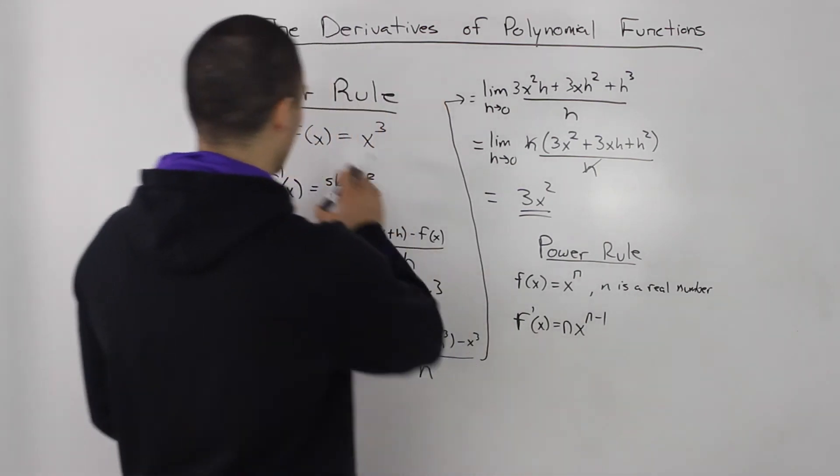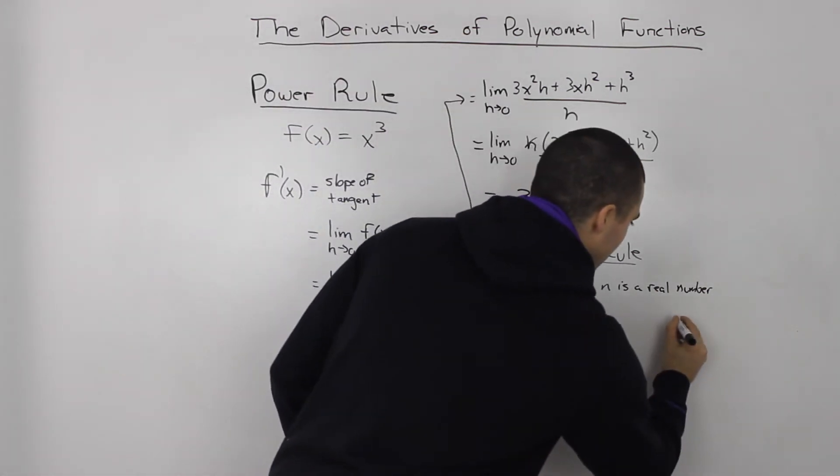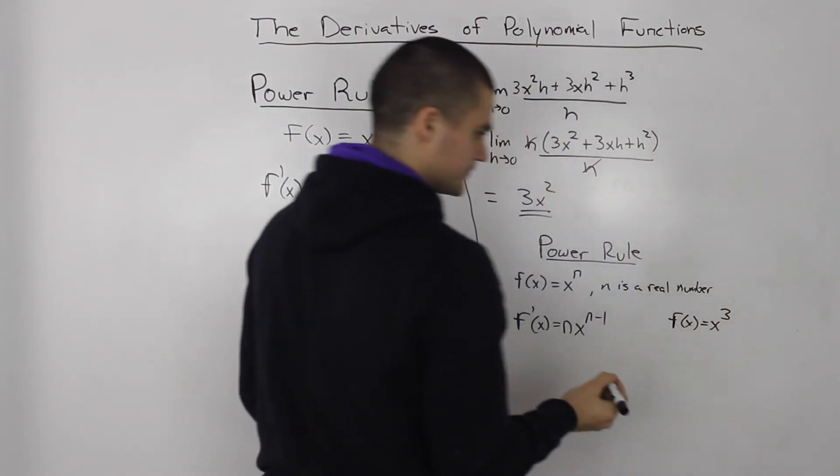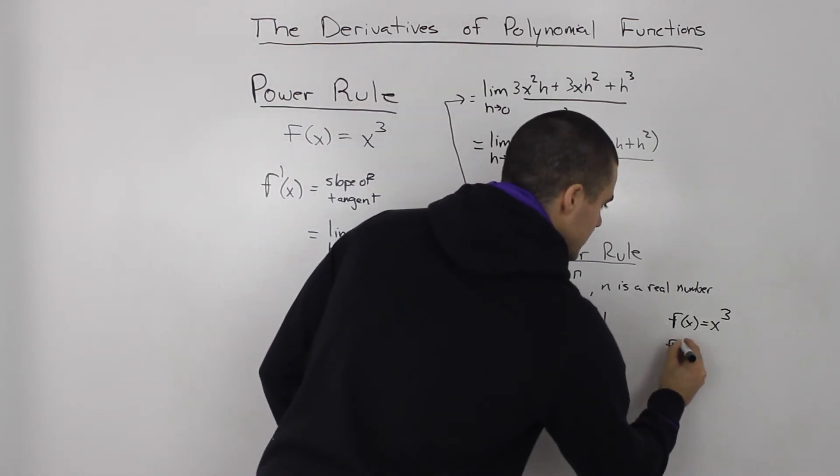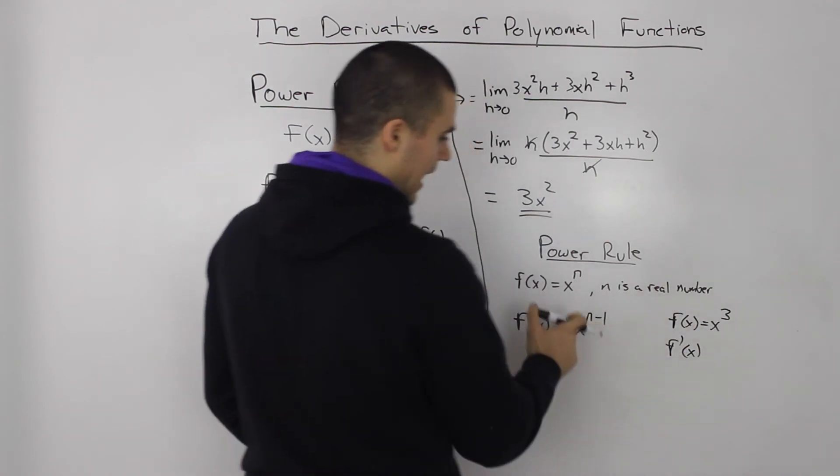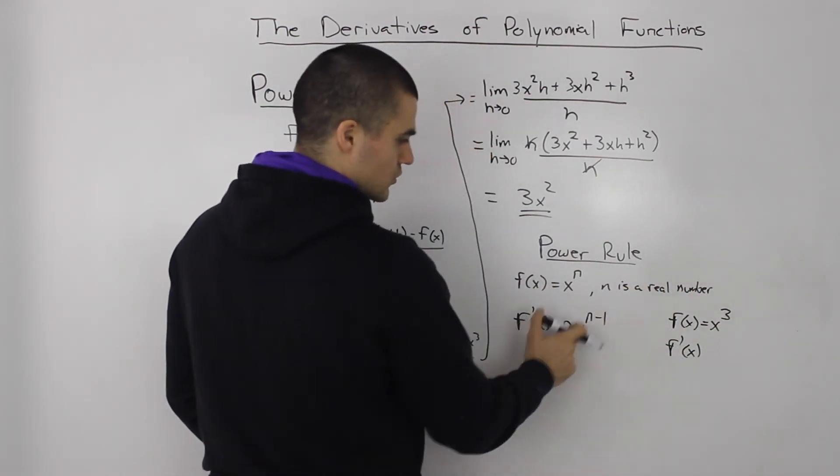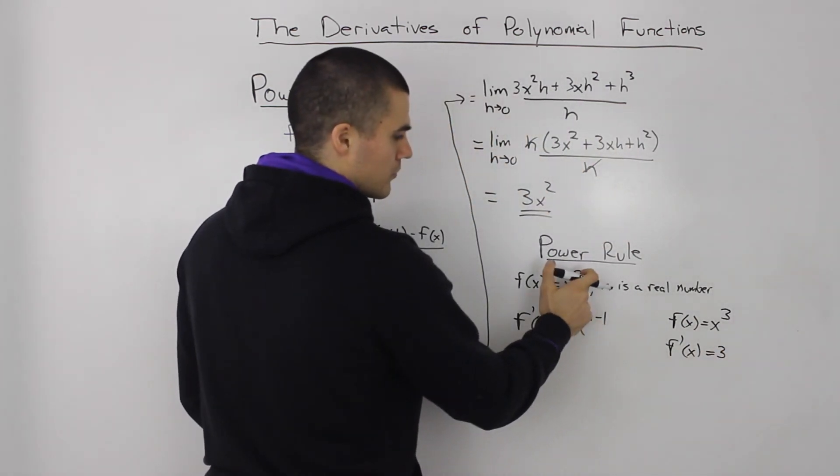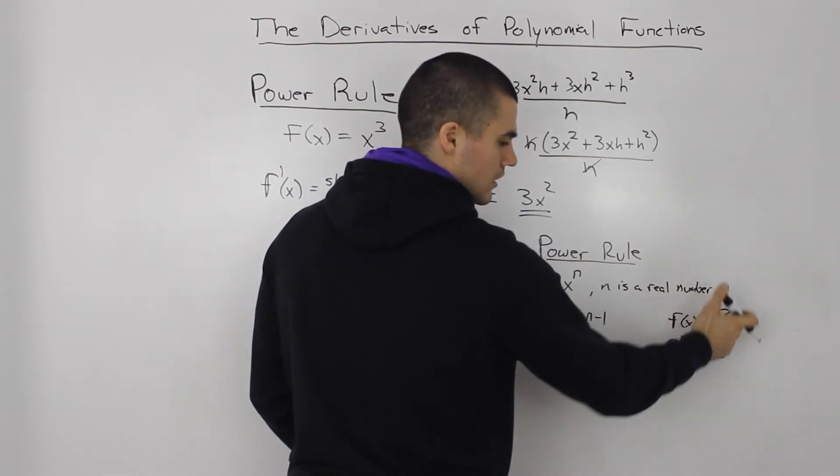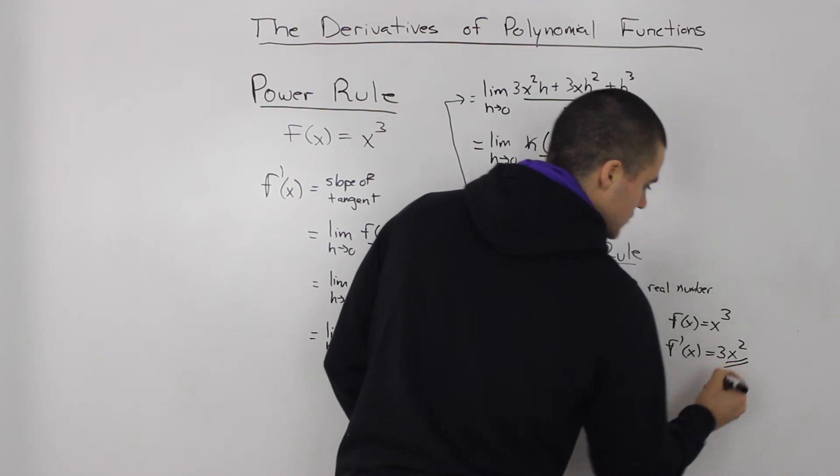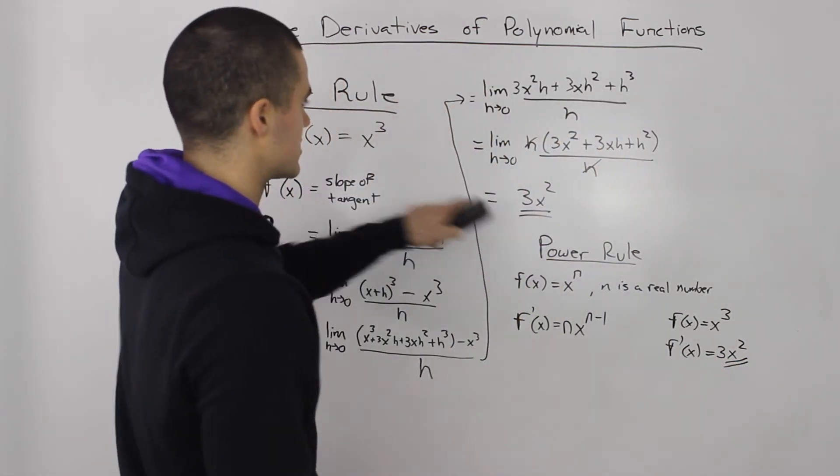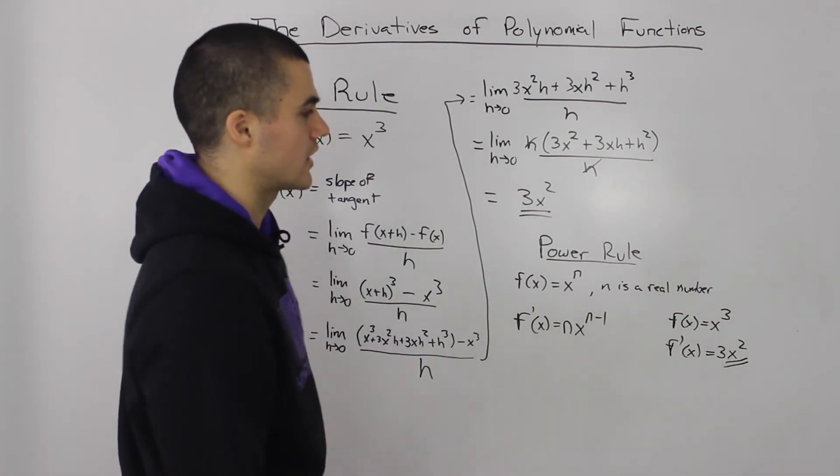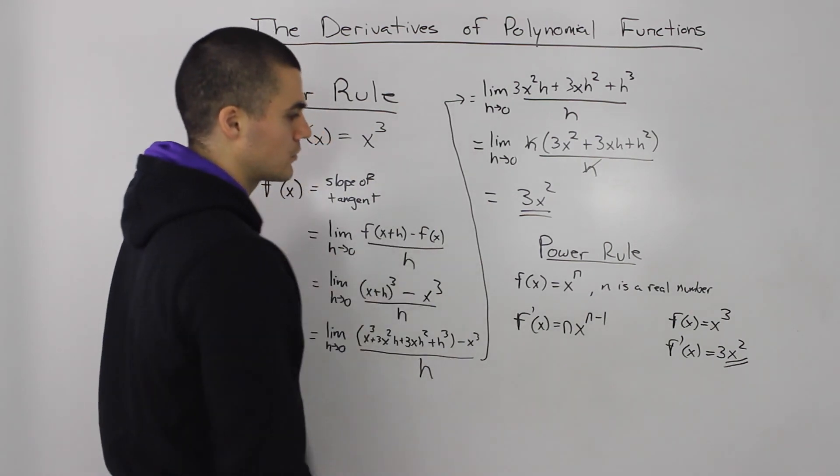So if we applied the power rule to this question that we had, we had f of x equals x cubed. Well, if we just use the power rule, what happens? The n is 3, so the derivative—we bring the 3 down, and then we minus 1 from the degree of the original function, so we just end up with 3x squared. And notice how that's the derivative we got by using the definition of a derivative. It's just a shortcut for these kinds of polynomial functions.